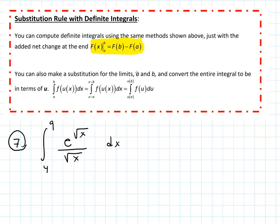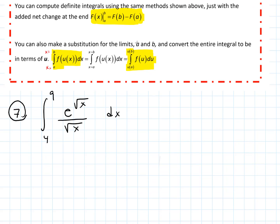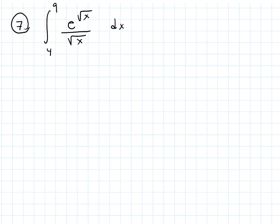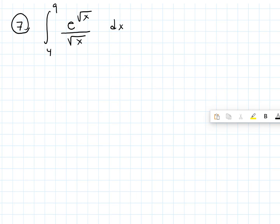There is one other way we could do it. After we make the substitution for u, we can also make a substitution in the bounds — changing them to be in terms of u rather than x. You sort of just choose whatever you're comfortable with. If you want to change your bounds, change your bounds. If not, just make sure you go back in terms of x before you plug your bounds in.